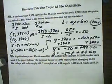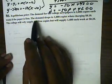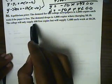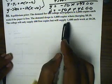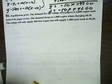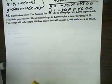Now, next, we're looking for equilibrium price. It says that the demand for the college newspapers is 2,000 copies each week if the paper is free. The demand drops down to about 1,000 when they start charging 10 cents for them. Now, the college will only supply 600 free copies, but it will supply 1,400 copies if they start selling them for 20 cents.